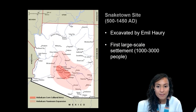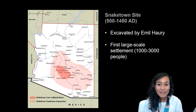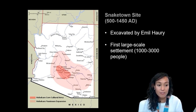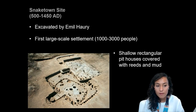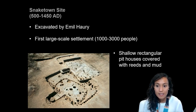Snaketown was excavated in the 1960s by Emil Haury, the person whom the Haury building is named after at the University of Arizona. At the height of its occupation, Snaketown contained between 1,000 and 3,000 people, making it one of the largest aggregations of people for this time period in the American Southwest. Emil Haury's excavations revealed that the population in these Hohokam villages lived in pit houses.